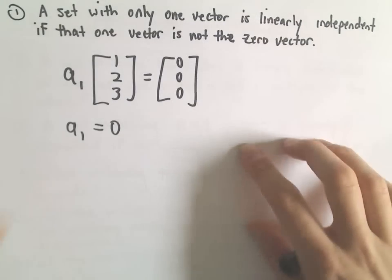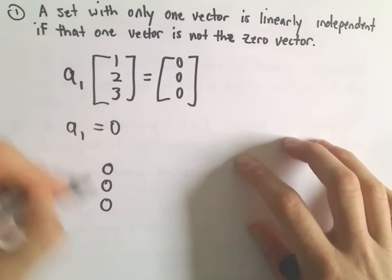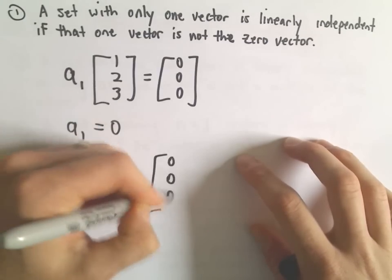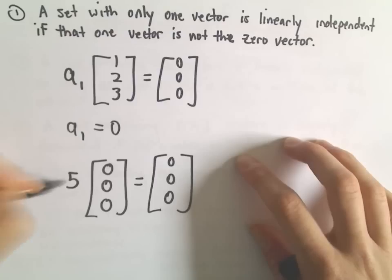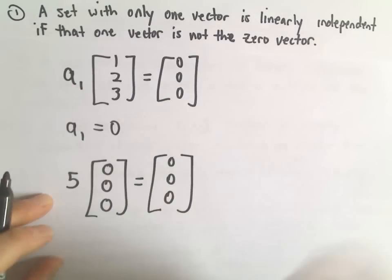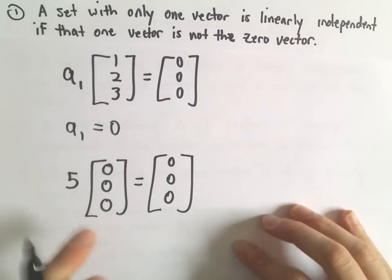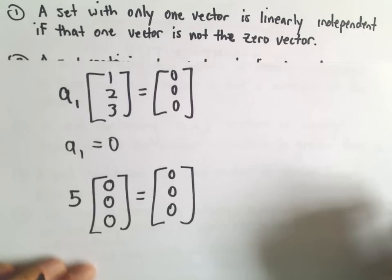Obviously this is not true with the zero vector, because then you can multiply by any non-zero constant and get the zero vector. So in that case, if the zero vector is there, it would have to be linearly dependent.